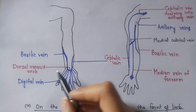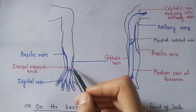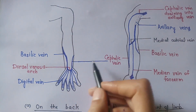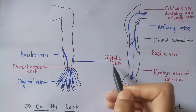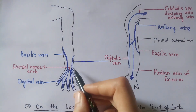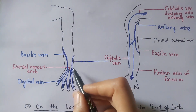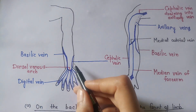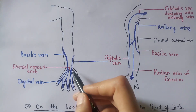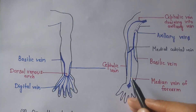At the lateral end of the dorsal venous arch, the cephalic vein begins. So at the lateral end of the dorsal venous arch, the cephalic vein originates.